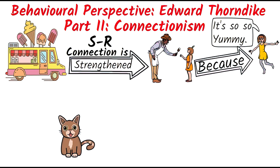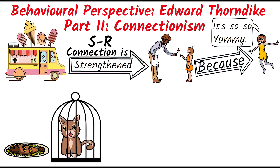For this, Thorndike devised a classic experiment in which he used a puzzle box. A hungry cat was locked inside the puzzle box. The cat, trapped inside, would explore its environment and come across various devices such as a loop of string, a ring, a button, or a panel to be pressed. Only one of these devices was connected to the latch that would open the door of the box.